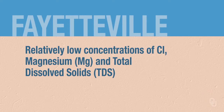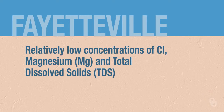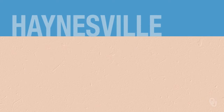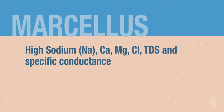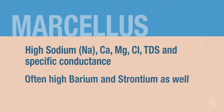In the Fayetteville, there are relatively low concentrations of chloride, magnesium, and total dissolved solids. In the Haynesville, there are high calcium concentrations, magnesium chloride, total dissolved solids, and total suspended solids. In the Marcellus, you have high sodium, calcium, magnesium, chloride, total dissolved solids, high specific conductance, and often high barium and strontium as well. The salinity of produced water